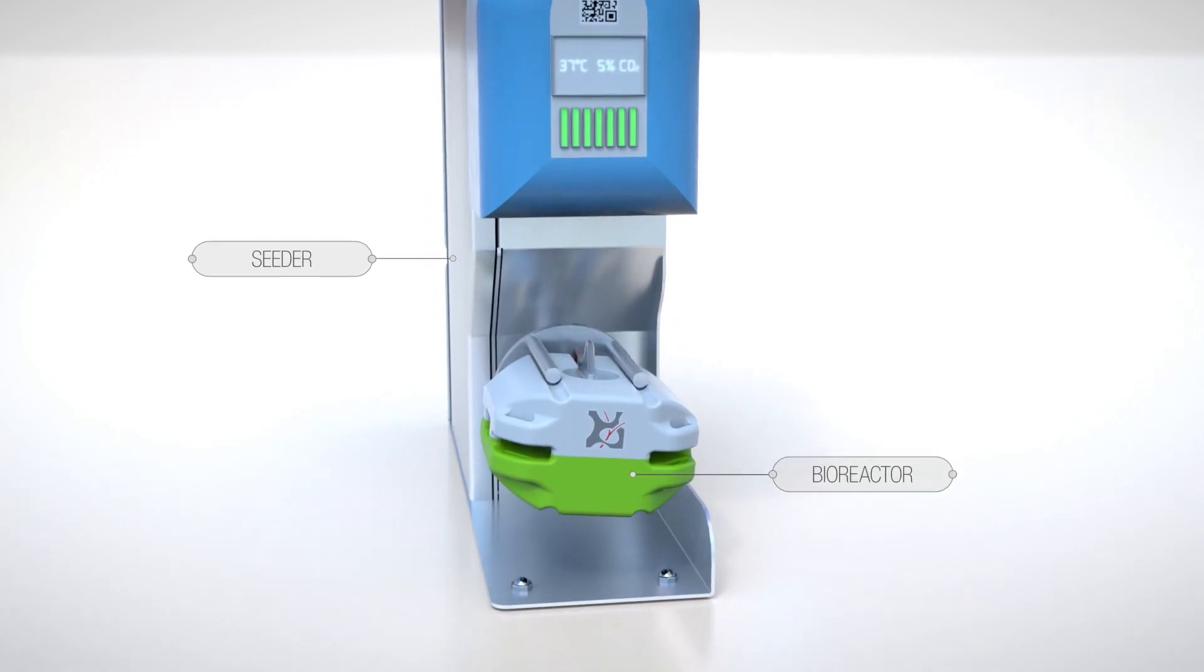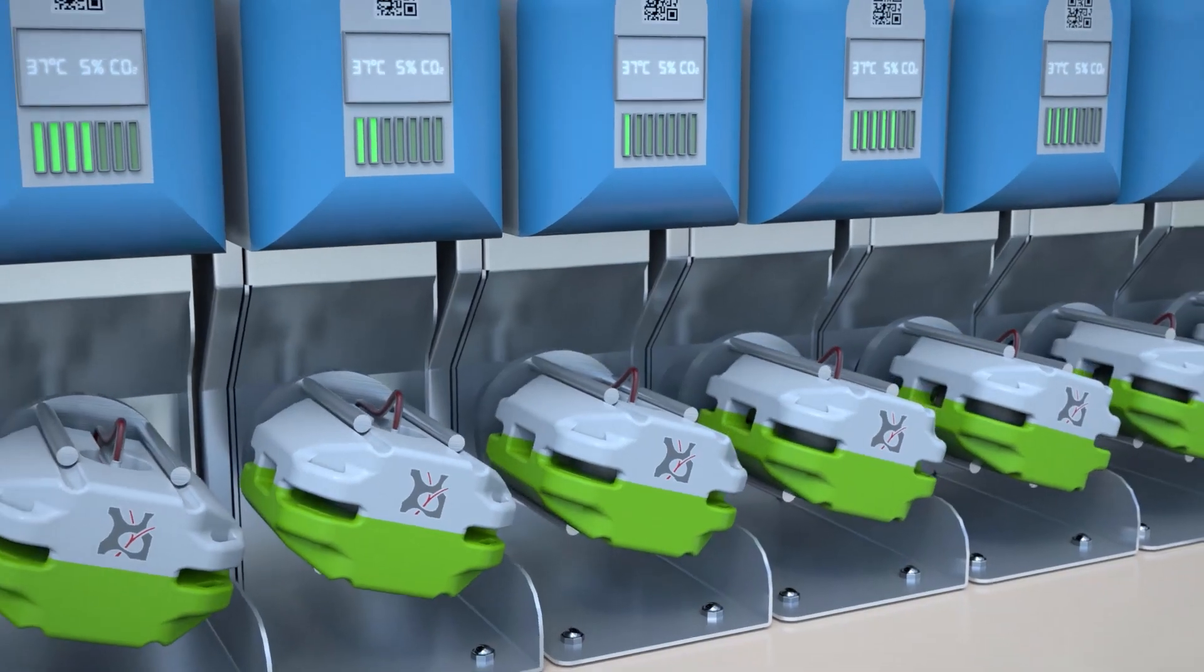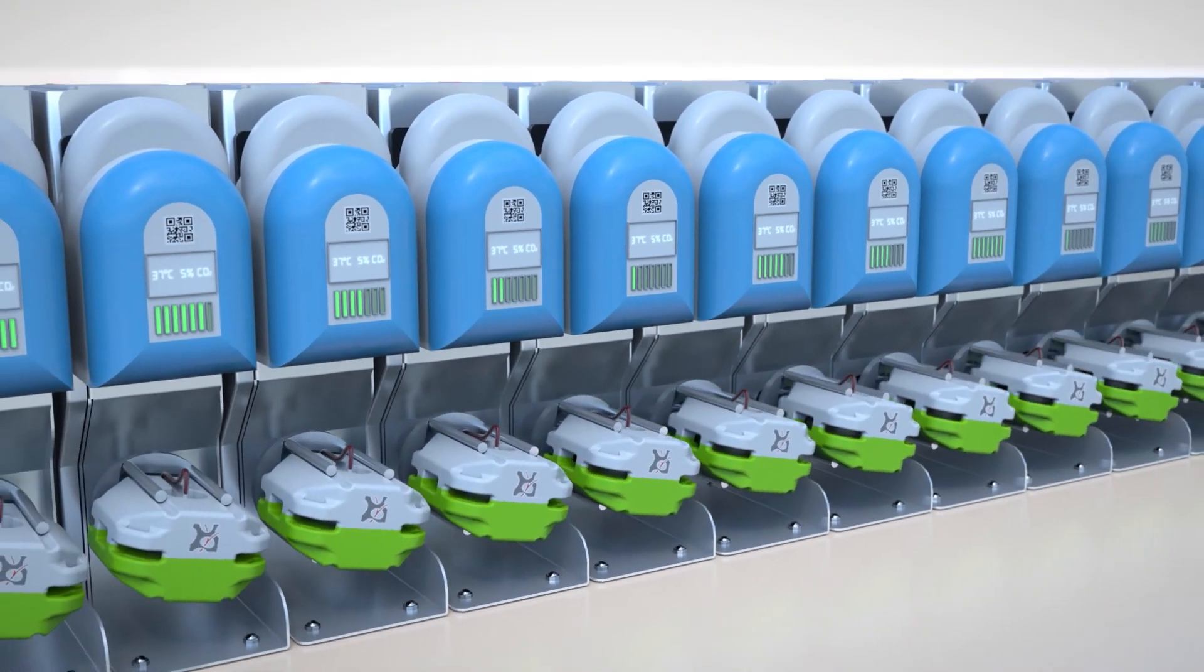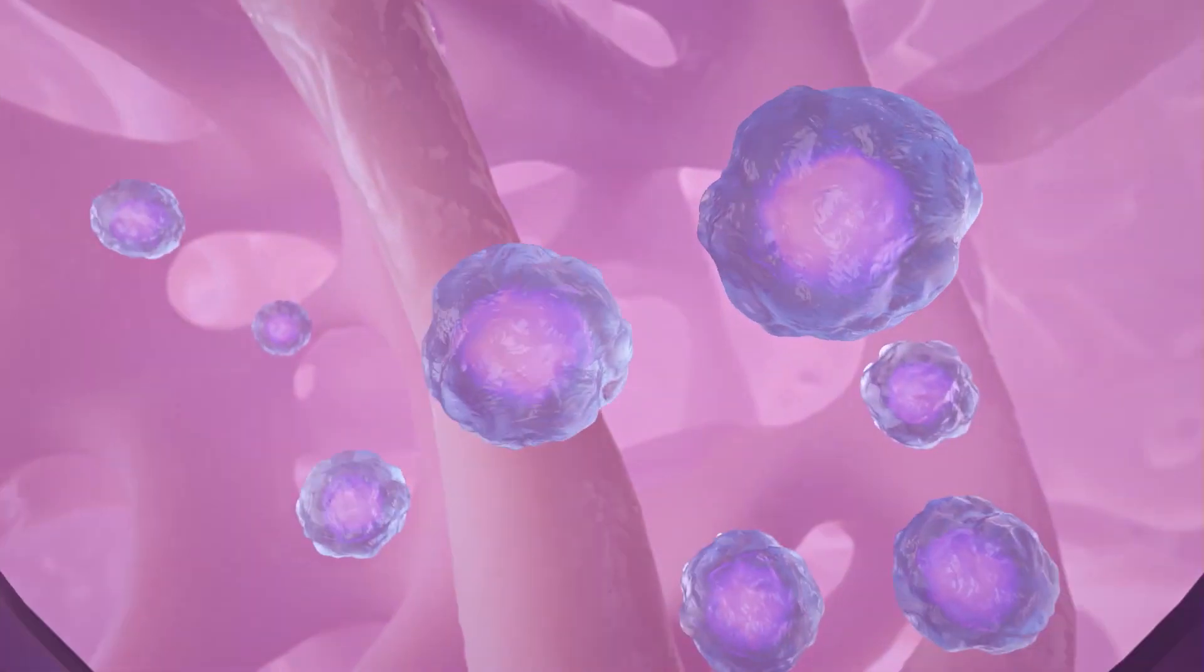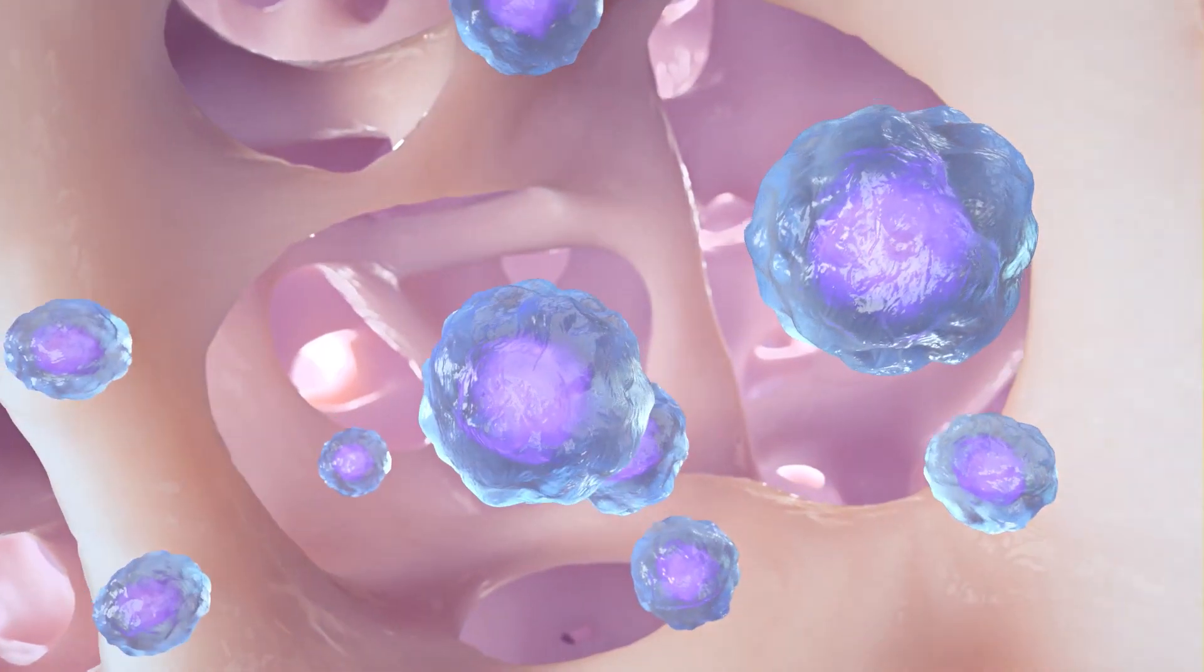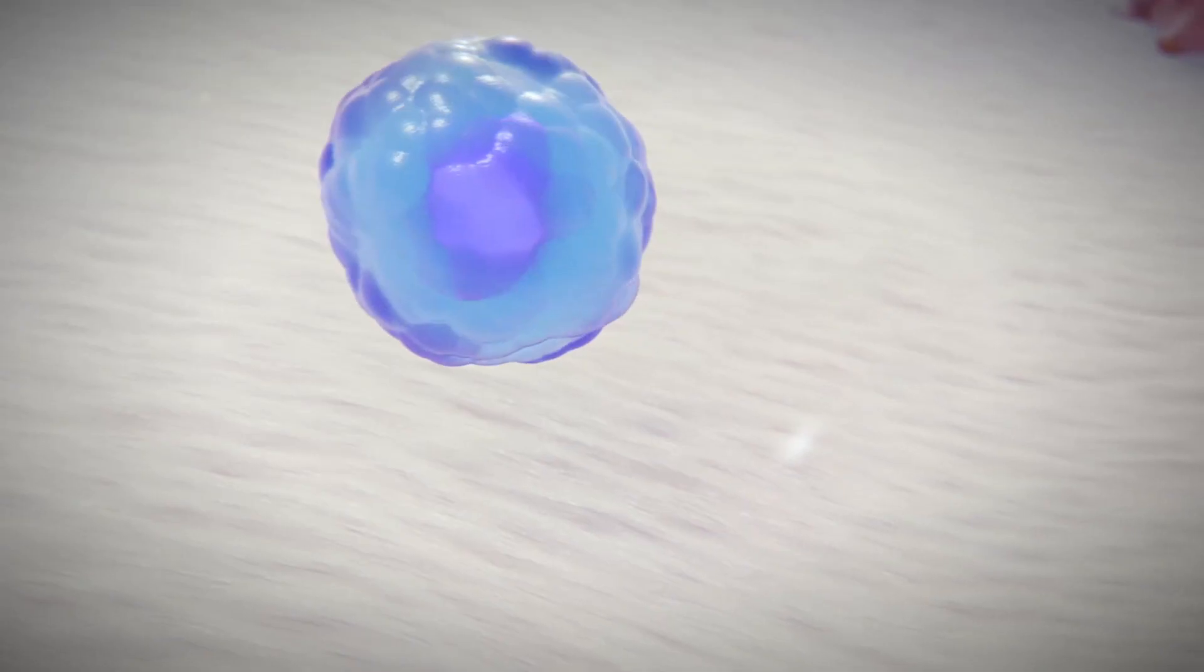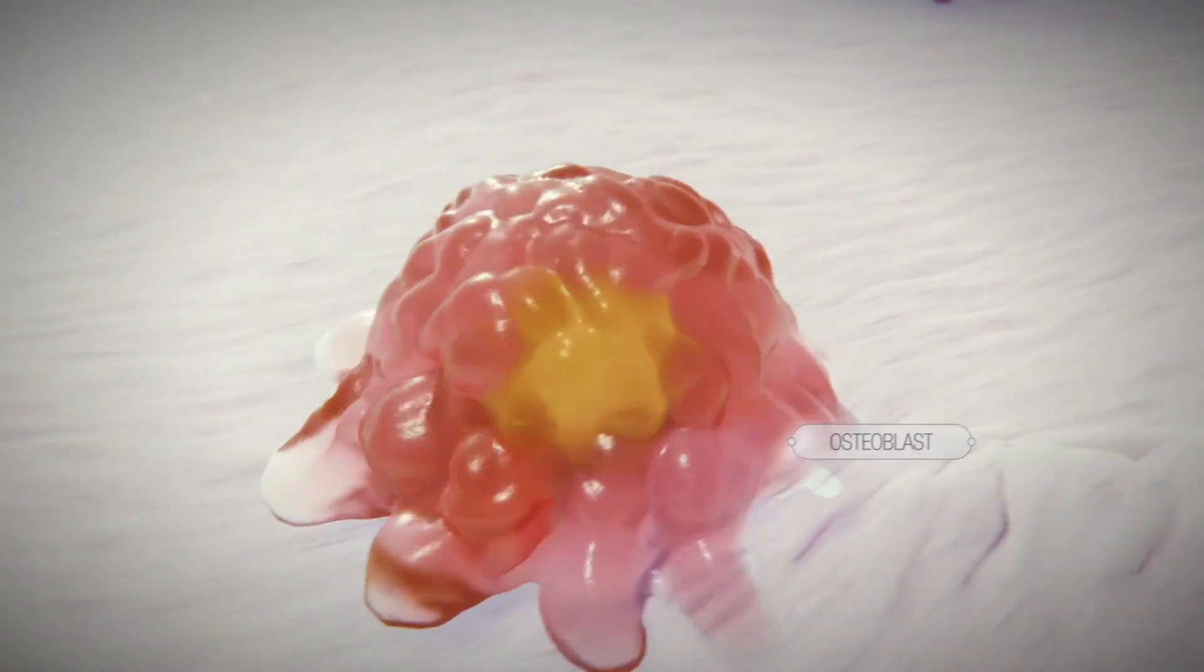Then our secret sauce is the bioreactor component. This is a fancy word for a cell culture system in which we use engineering principles to mimic the conditions of the human body, providing controlled oxygen, nutrient delivery, and mechanical forces that are important to get those stem cells to become bone and cartilage. And after three weeks we have a piece of tissue that's ready for implantation.